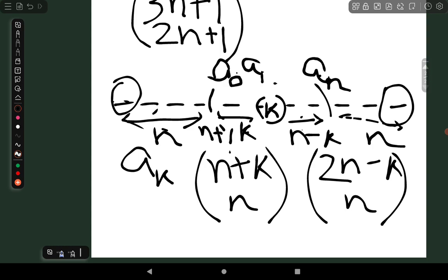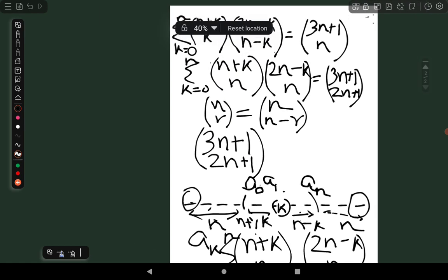Now, as you can see, k can run from 0 to n. So, this would be summation of k, 0 to n. And, this would be the same as our LHS part as you can see here.